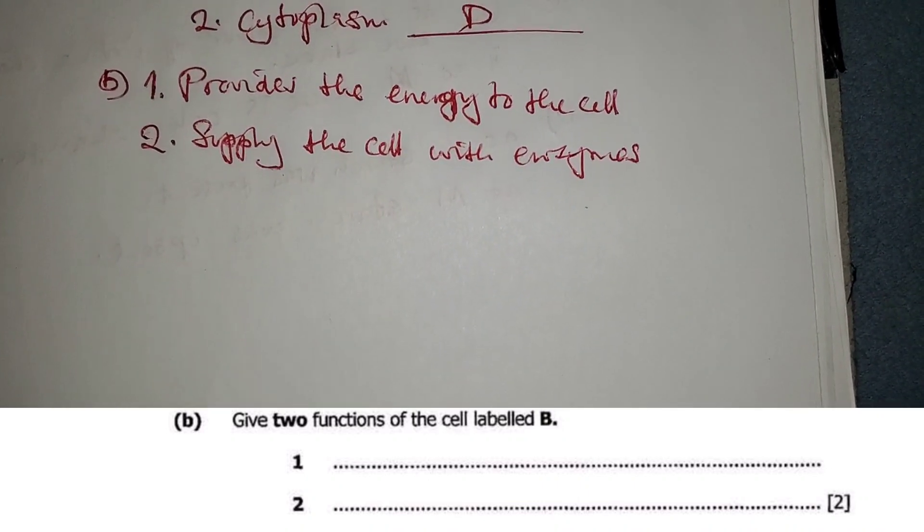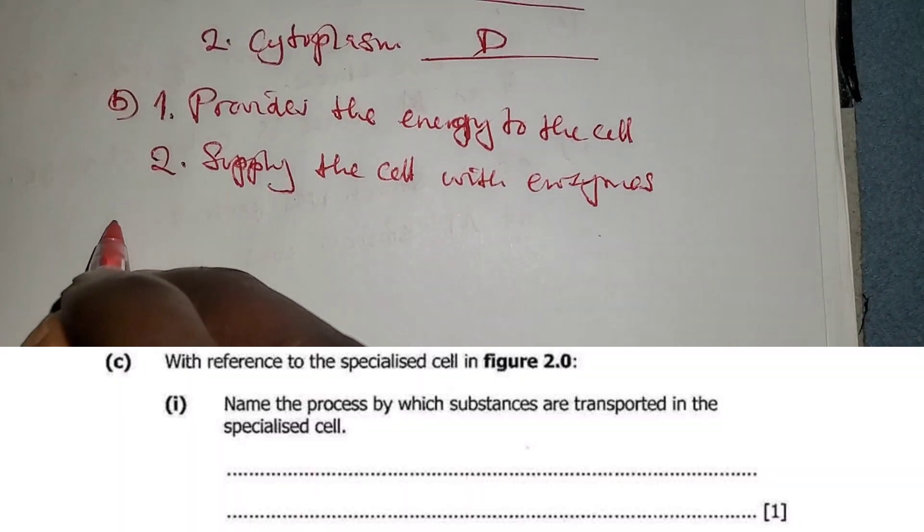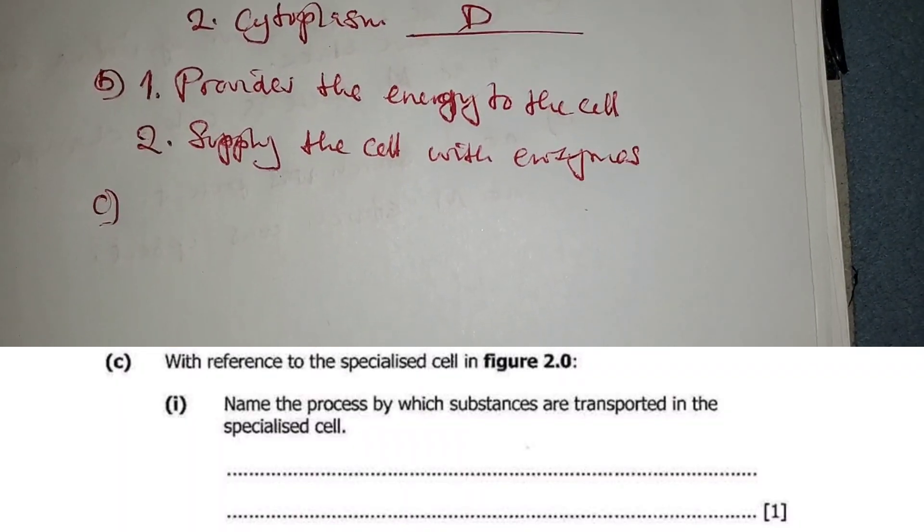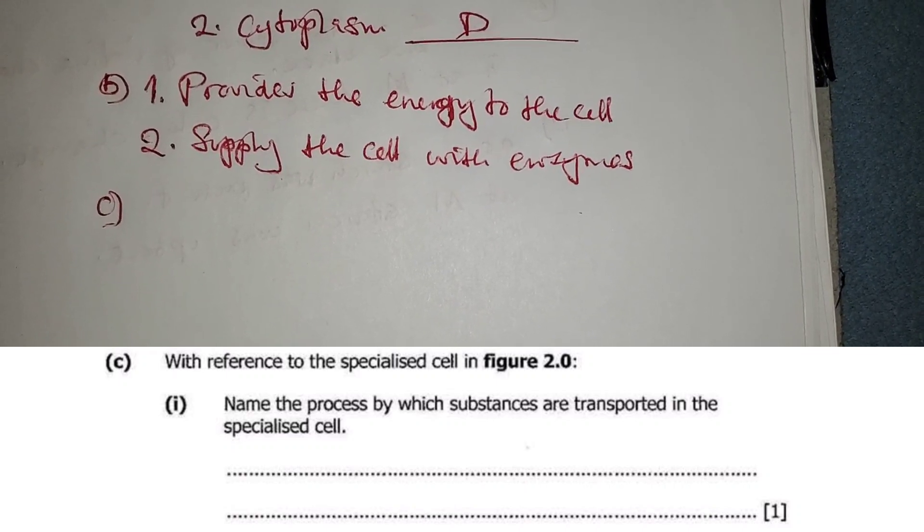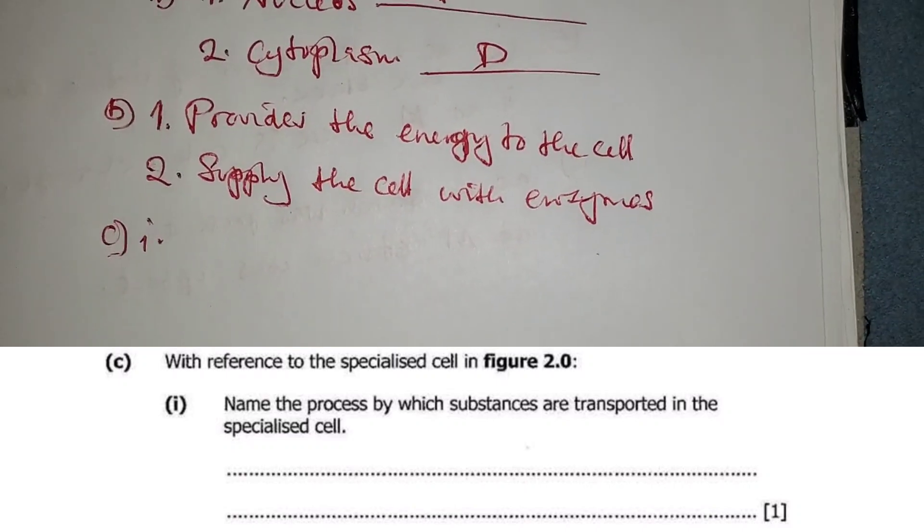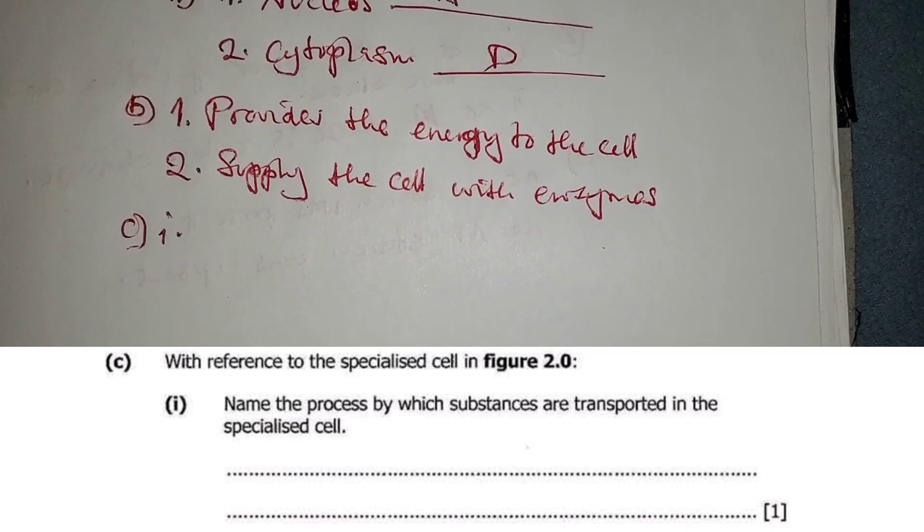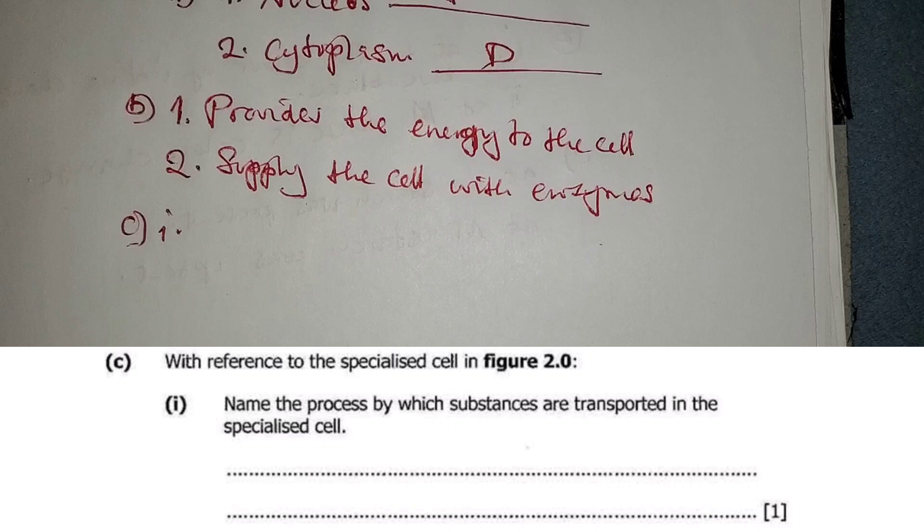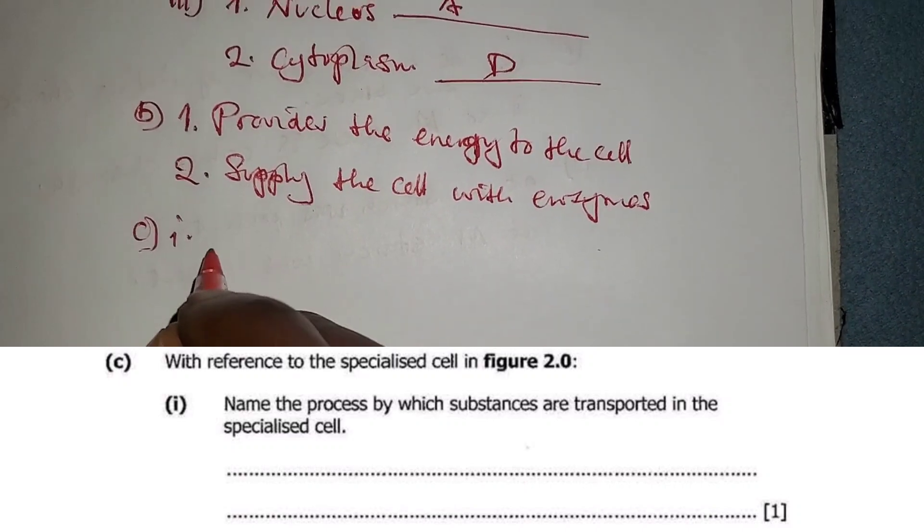Question C: With reference to the specialized cell in Figure 2.0, C1: Name the process by which substances are transported in the specialized cell. The process by which substances are transported in the phloem is called translocation.